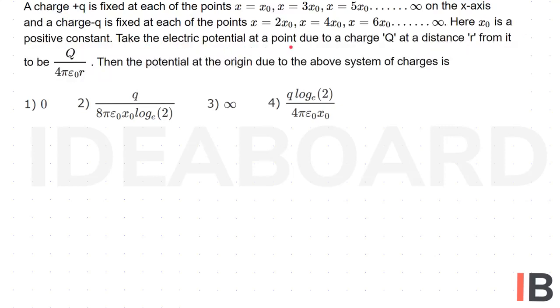Take the electric potential at a point due to charge Q at a distance r from it to be q by 4 pi epsilon not r. Then the potential at the origin due to the above system of charges is.